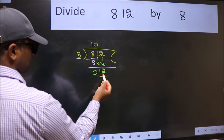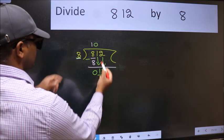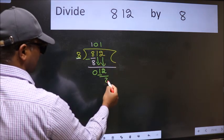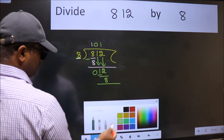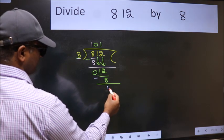So 12. A number close to 12 in 8 table is 8 once 8. Now we subtract. We get 4.